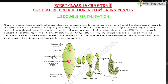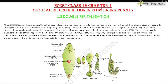After entering one of the synergids, the pollen tube releases the two male gametes into the cytoplasm of the synergid. One of the male gametes moves towards the egg cell and fuses with its nucleus, thus completing the syngamy. This results in the formation of a diploid cell — the zygote.